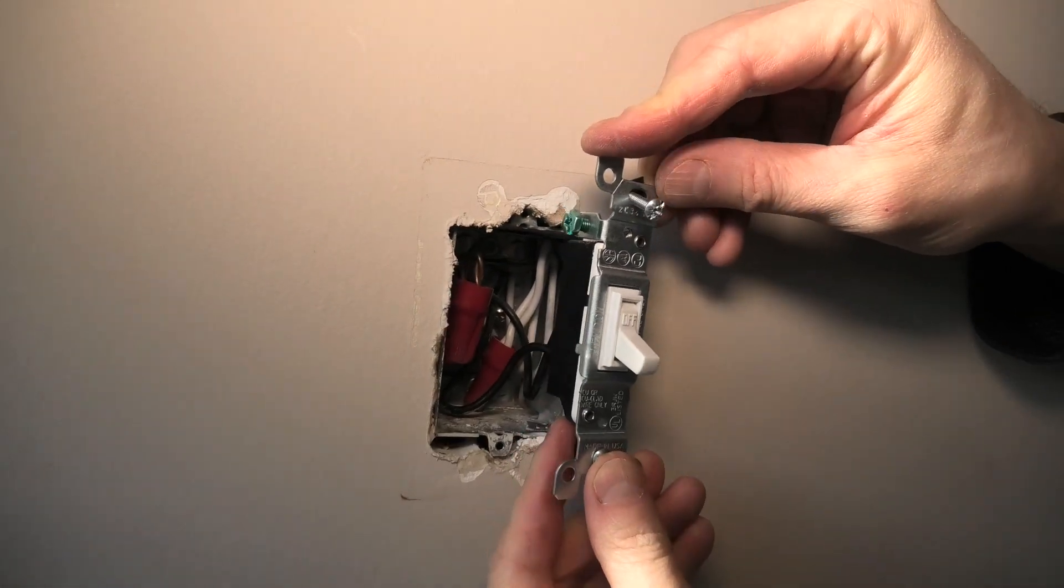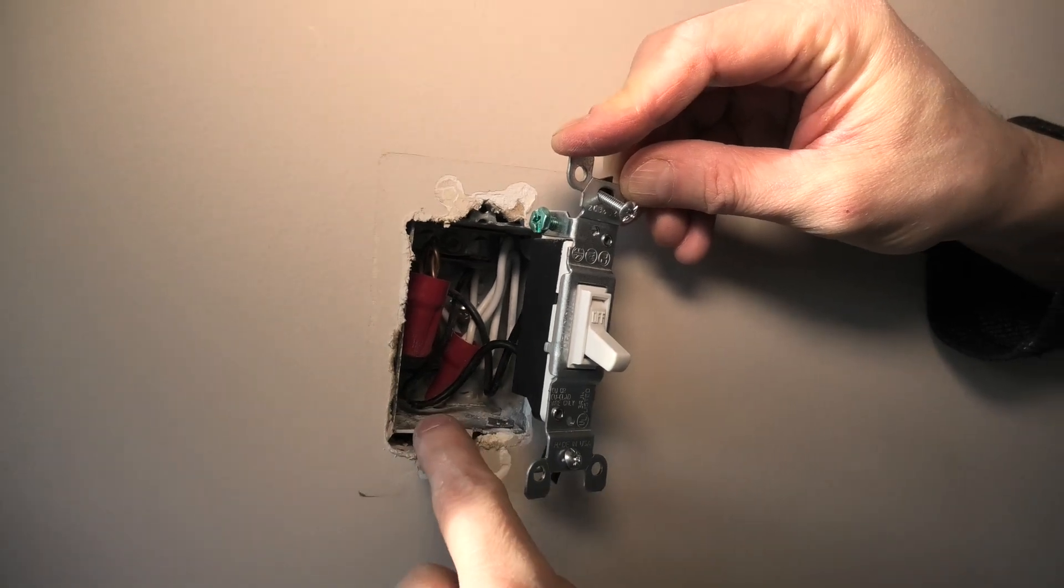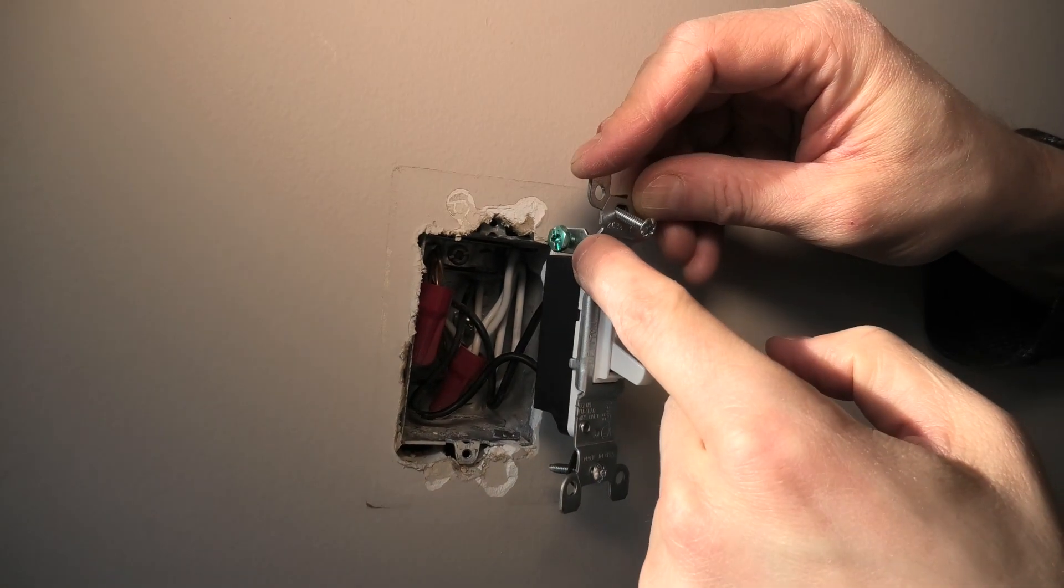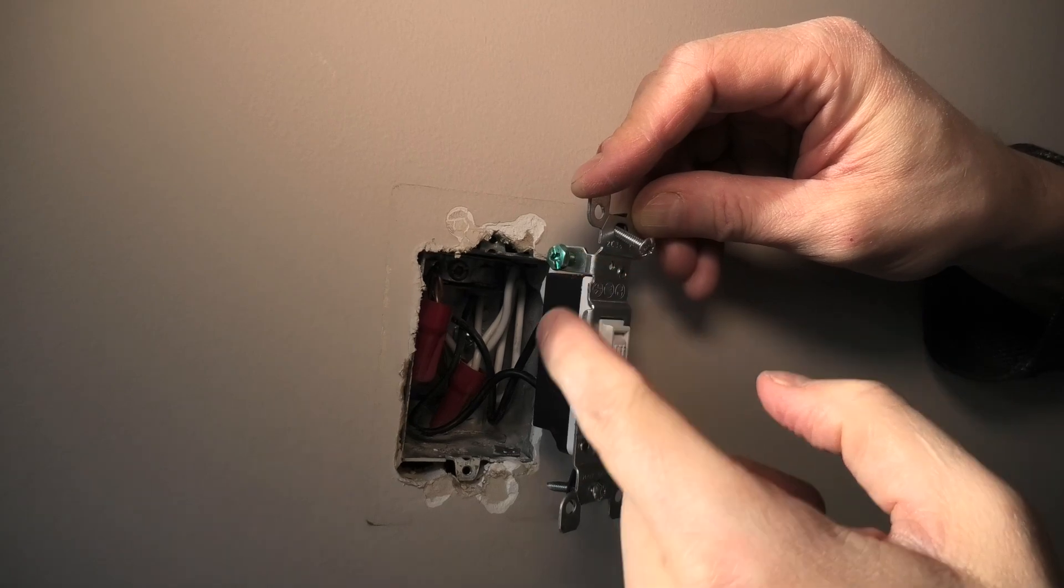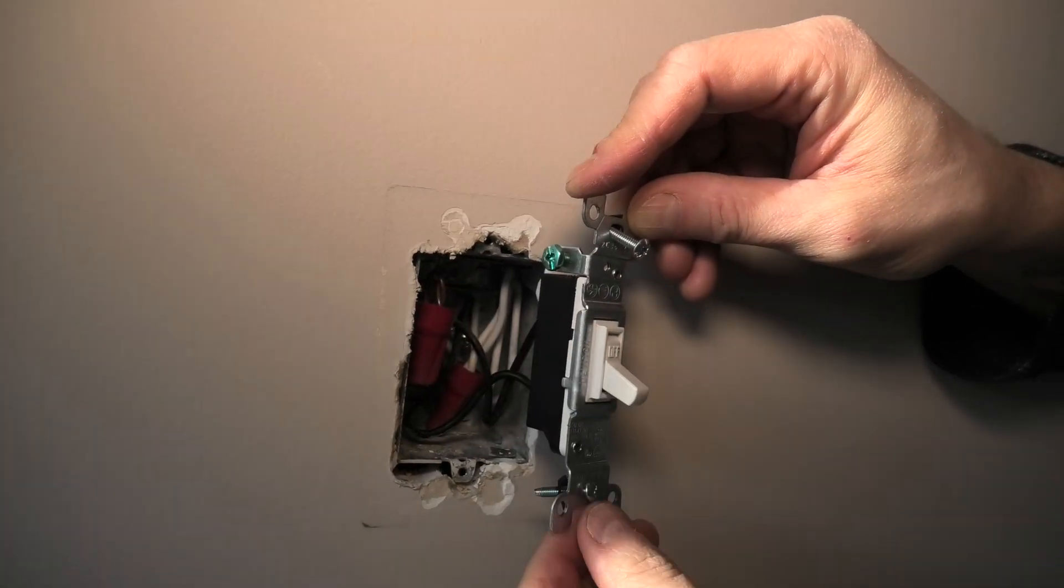And in general, if you are not certain if your box is grounded, you need to connect this grounding screw to the grounding wires inside the box.